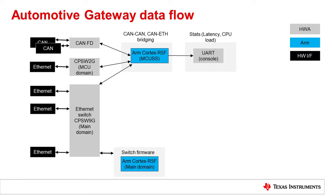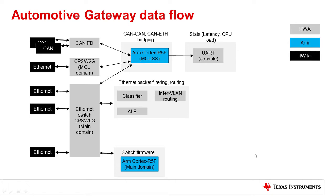Ethernet firmware running on one of the main domain R5 cores handles the switch configuration and provides the interface for dynamic switch configuration management. The integrated Ethernet switch includes a number of hardware blocks that can be used for packet inspection, classification, and filtering. These can be leveraged for steering traffic to multiple CPU cores on the Jacinto 7 platform, traffic filtering and rate limiting using layer 2 and layer 3 header fields, and hardware offload for inter-VLAN routing.